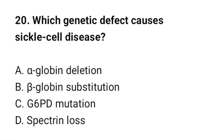Question number 20: Which genetic defect causes sickle cell disease? The correct option is B: Beta-globin substitution.